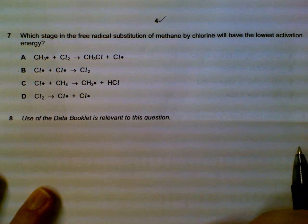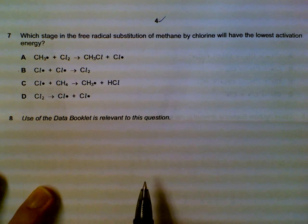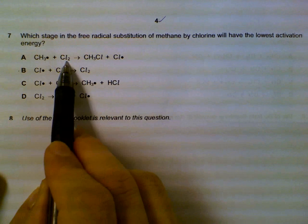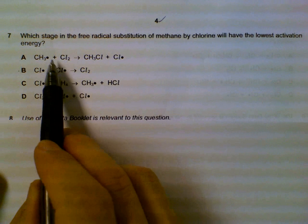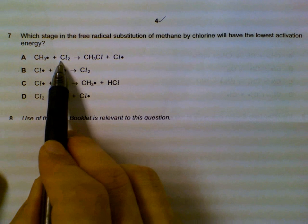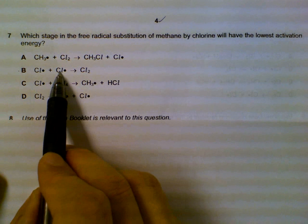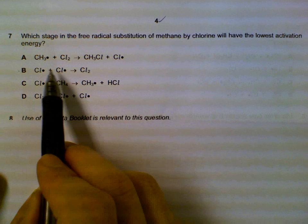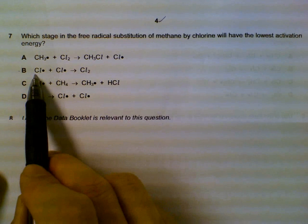Number seven. Free radical substitution. Which one has the lowest activation energy? Now, for A, what actually has to happen at the first instance will be we have to break up the chlorine-chlorine bond. For B, there's no bond breaking occurring. Rather it's bond forming. So the activation energy of these two free radicals reacting, they are very reactive. So the activation energy will be the lowest.